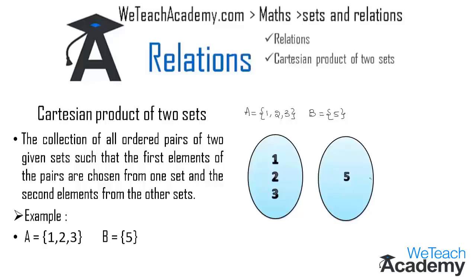We have two Venn diagrams: the first represents set A with its elements, and the second represents set B. Now let us map the elements of A with the element of B. Here 1 is mapped with 5, and similarly 2 and 3 from set A are also mapped with 5. So we get the ordered pairs as (1,5), (2,5), and (3,5).